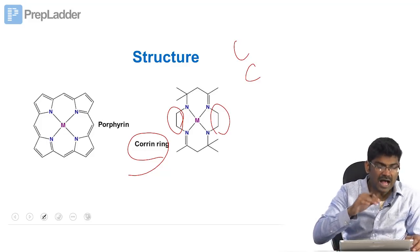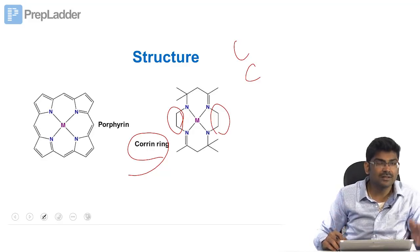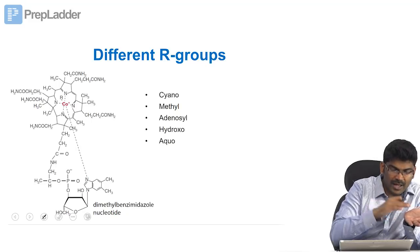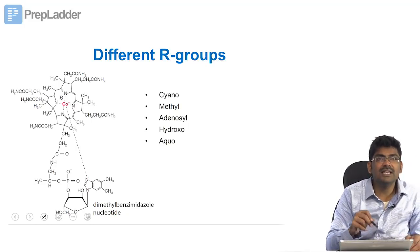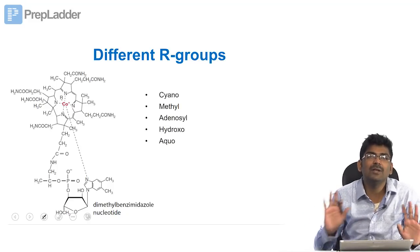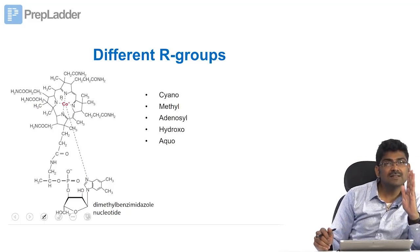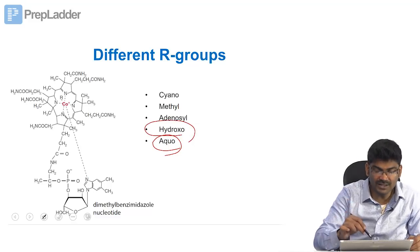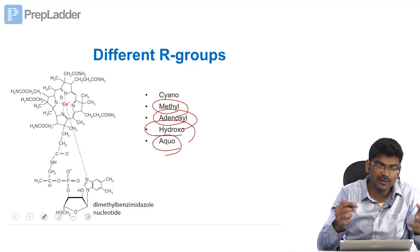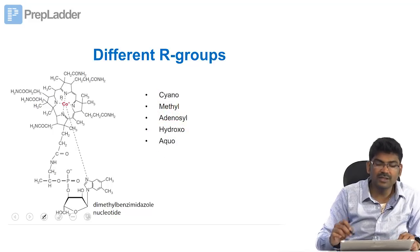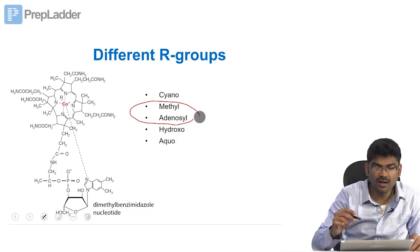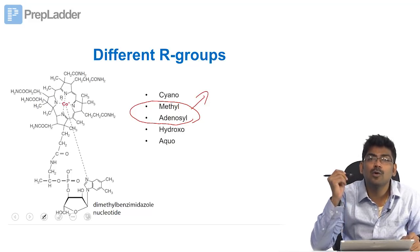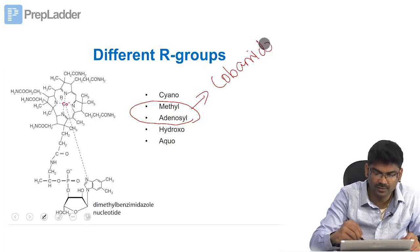Like heme iron, cobalt contains 6 coordination valences. Four are already bound to the pyrrole rings. The 5th valence is bound to DMB (dimethylbenzimidazole) nucleotide. The 6th valence is free. If the 6th valence is bound by water, that is aquocobalamin; if it is an OH group, hydroxycobalamin; if it is adenosyl, adenosylcobalamin; if it is a CH3 group, methylcobalamin; and if CN, cyanocobalamin. Methylcobalamin and adenosylcobalamin are the physiologically active forms, also known as cobamide coenzymes.